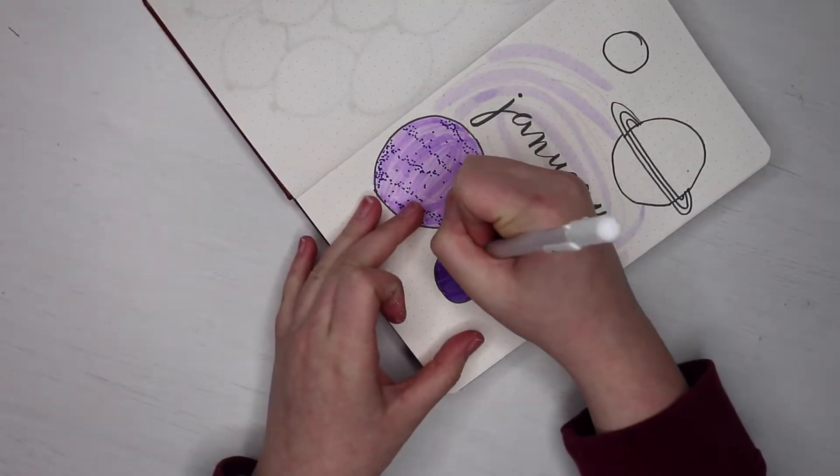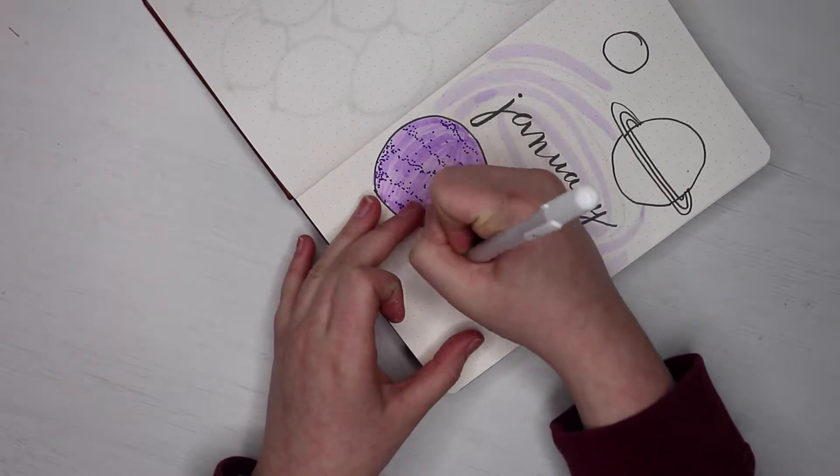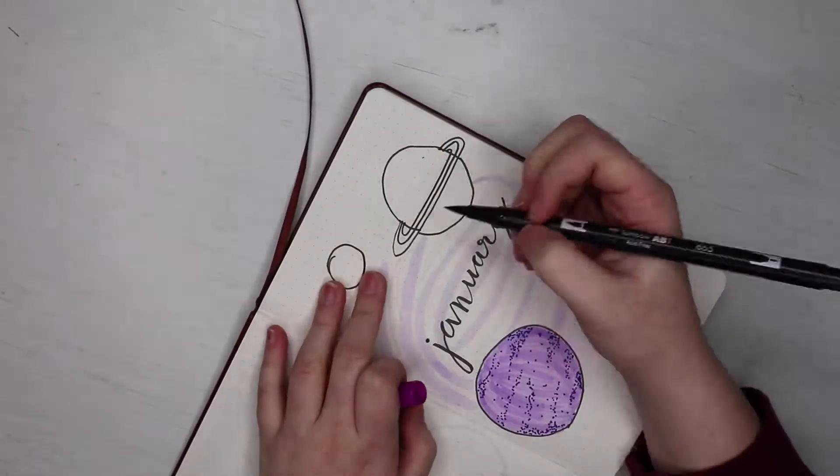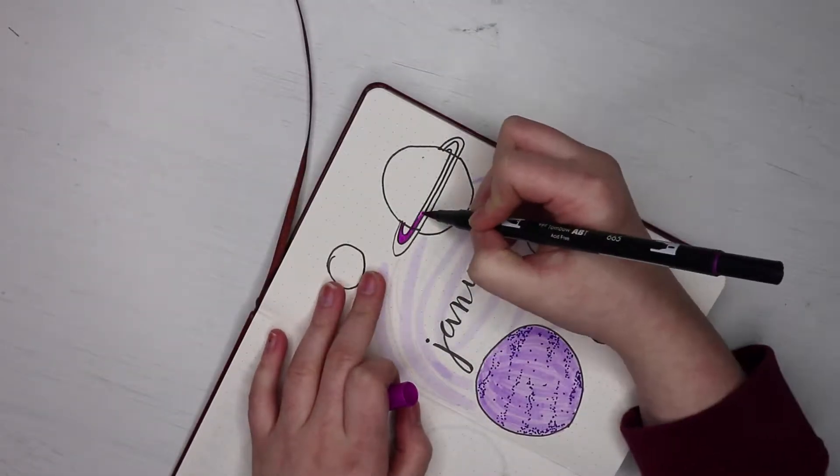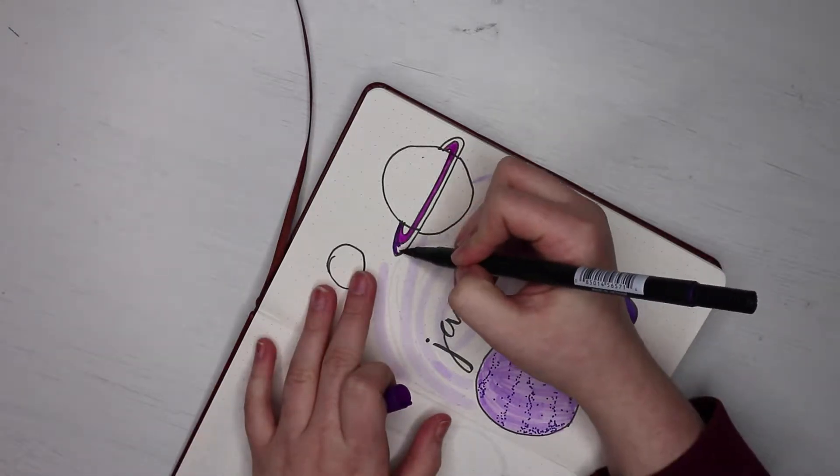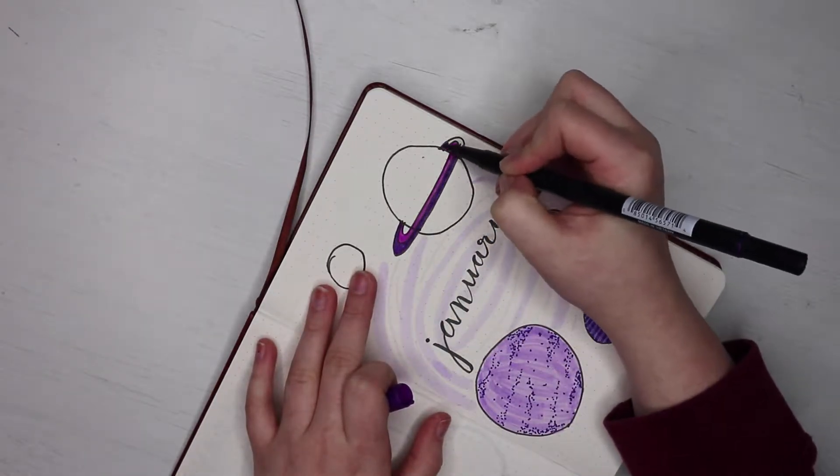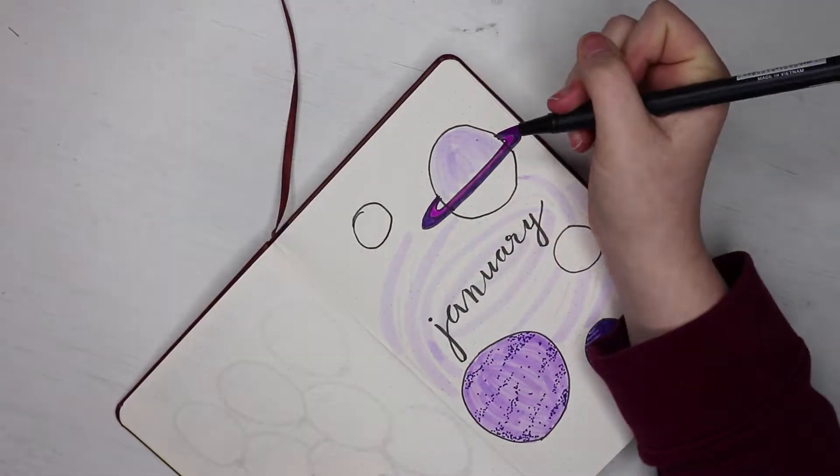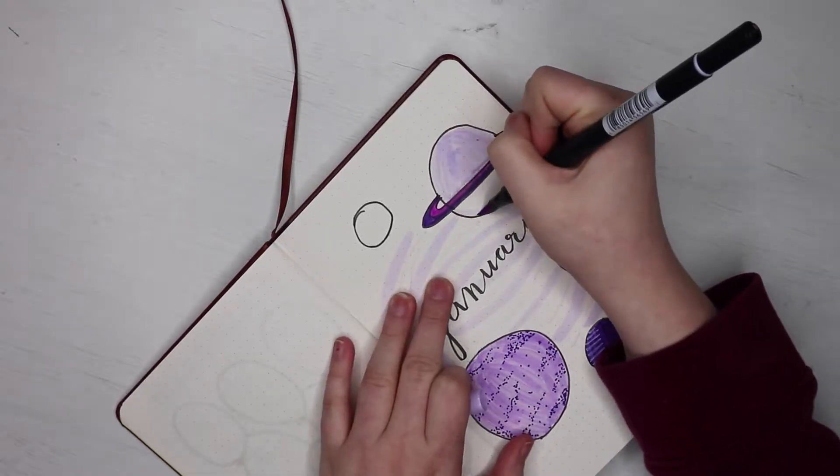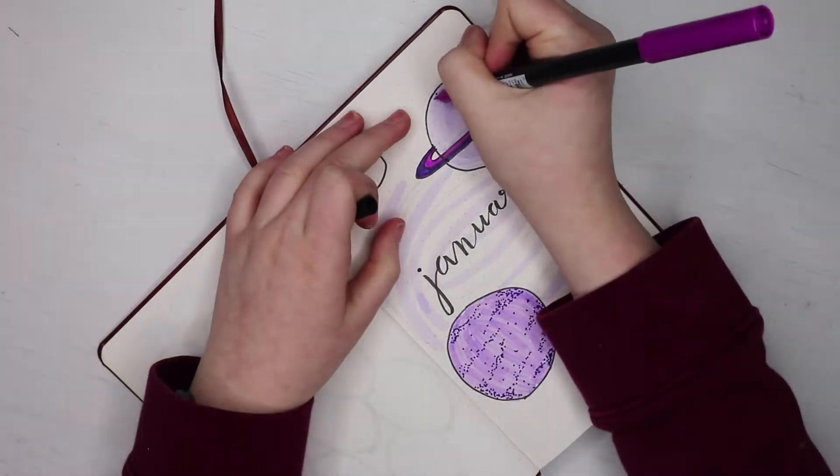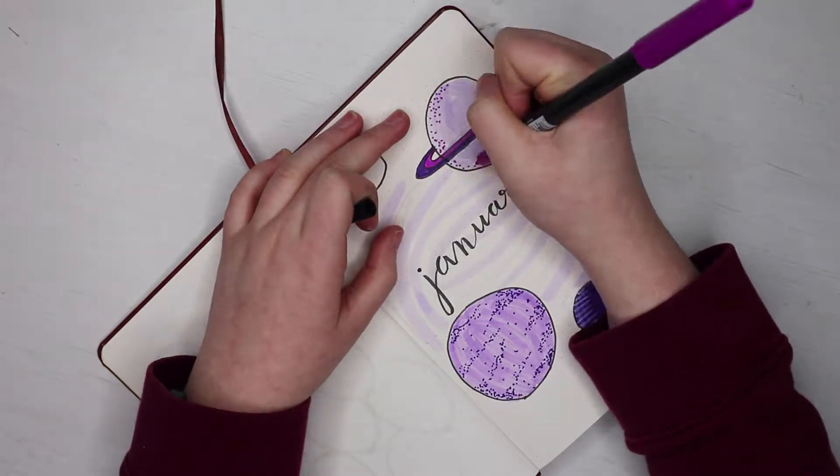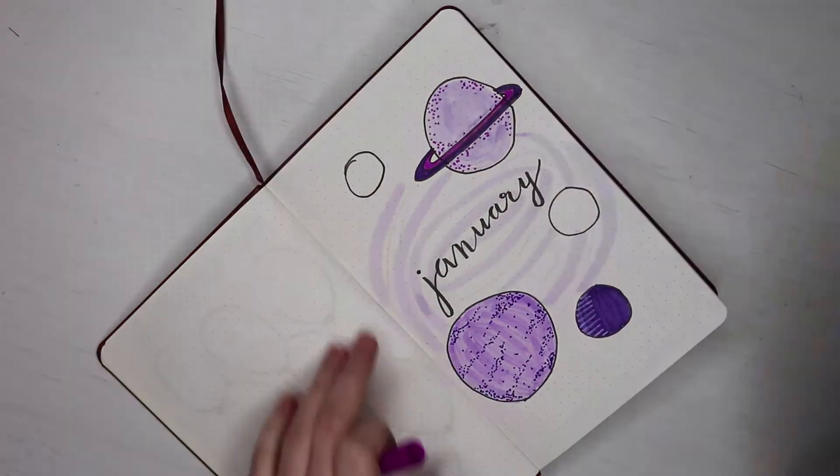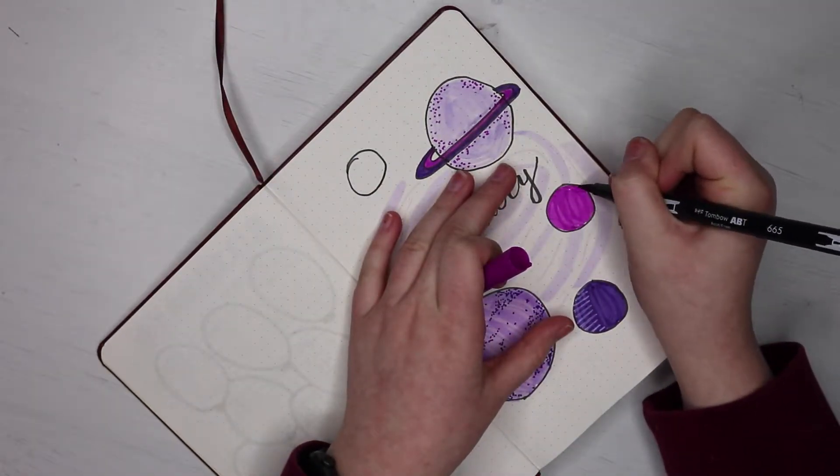So to add some dimension to this planet, I'm taking a white jelly roll gel pen and I'm just making lines on the planet. And then you'll see later on that I add silver over the top of it, just to match the stars in the background. I just want to let you guys know that all the markers I used are going to be listed in the description. So if you're ever wondering, that's where you can look.